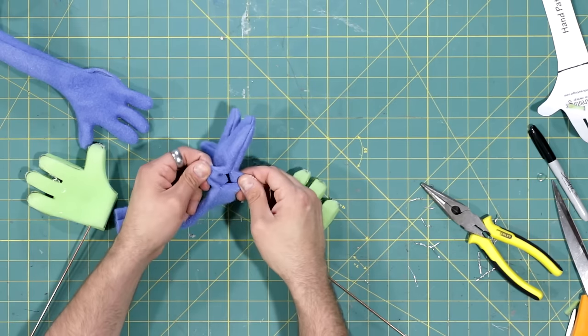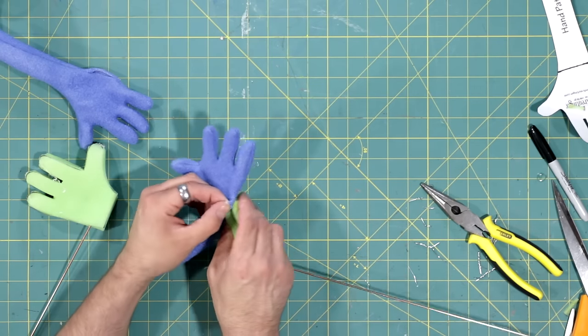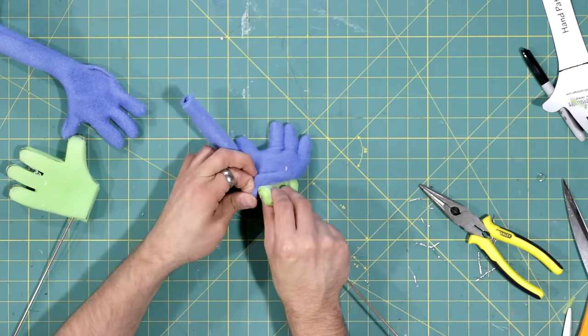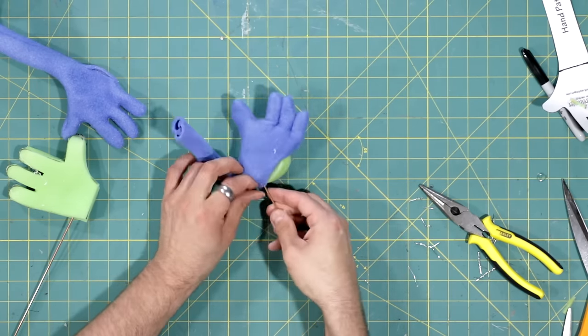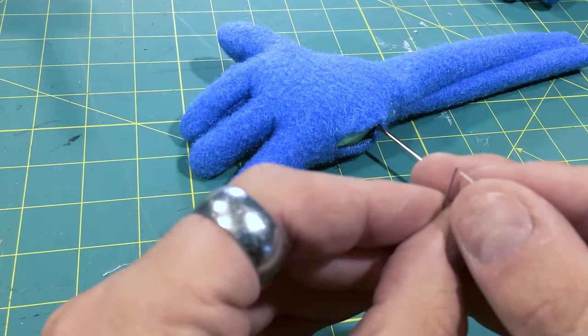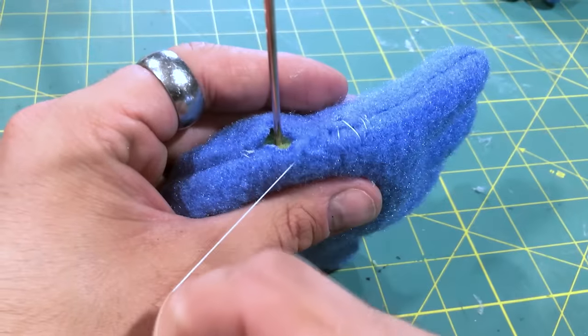And now for the tricky part. We have to fit this inside of our fabric covering. It takes a little bit of wrestling, but it will fit. Now we're going to stitch this together around the arm rod.